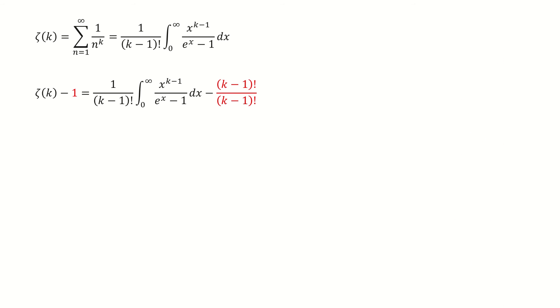Next, we subtract 1 on both sides of this equation. Note for the right-hand side, we write 1 as a factorial over factorial. Then we can take out this factor, 1 over k-1 factorial. So we got here.